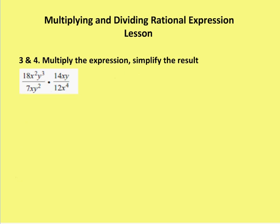Moving on — multiplying an expression and simplifying the result. I'm going to look for common factors between the constant, the x variable, and the y variable, factor those out between the numerator and denominator, and then multiply the two together.